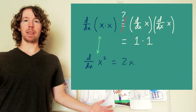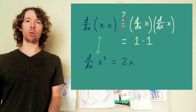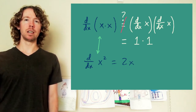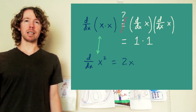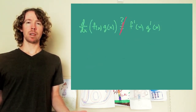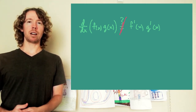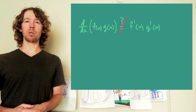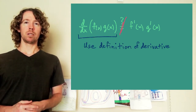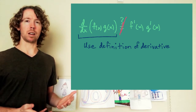So now I'm left wondering: is there even a rule here? Is there a pattern? If I take the derivative of f times g, it's not f prime times g prime — is there any pattern at all? There may not be, but just to see if there is one, I'm going to go ahead and use the definition of derivative to try to make something come out of it.